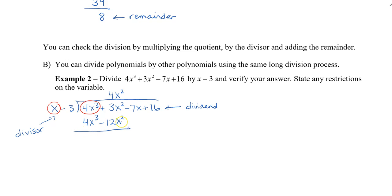We draw our line and subtract. The point of this first step is always to get rid of that first term — notice it becomes 0. Then 3x squared minus negative 12x squared gives me 15x squared. I bring down the next term, which is minus 7x, and start again. I figure out how many times x, the first term in the divisor, goes into 15x squared — that gives me 15x. I place plus 15x above the 7x, where the x terms are located.